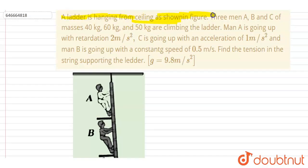from the ceiling as shown in the figure. Three men A, B, and C of masses 40 kg, 60 kg, and 50 kg are climbing the ladder.